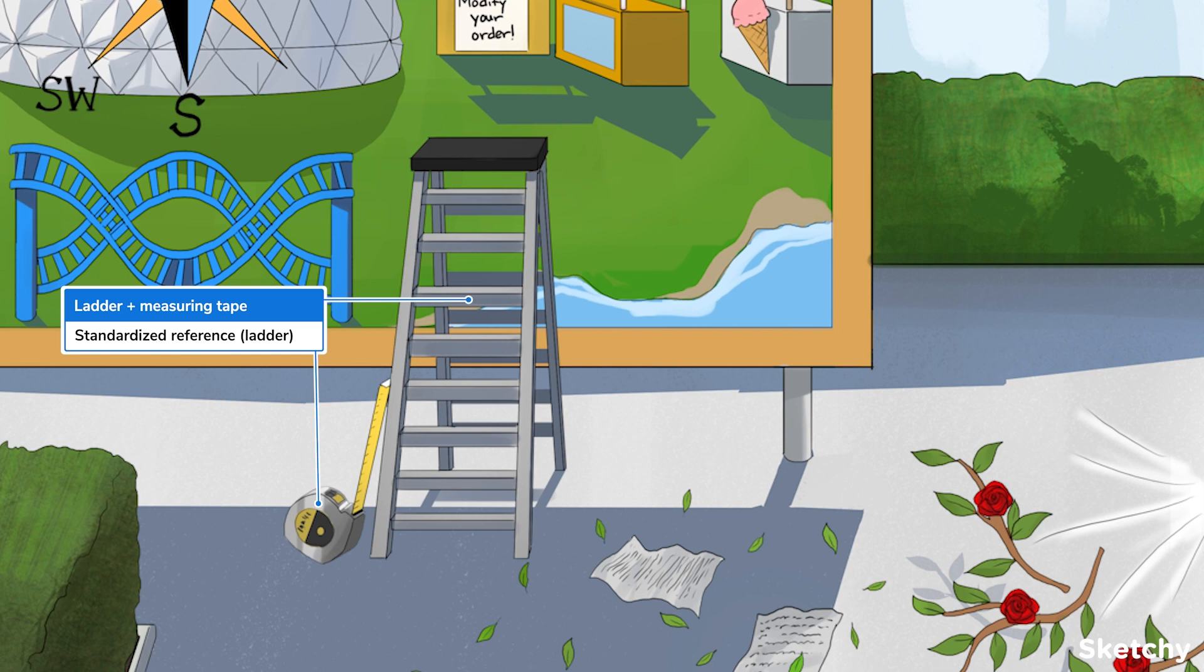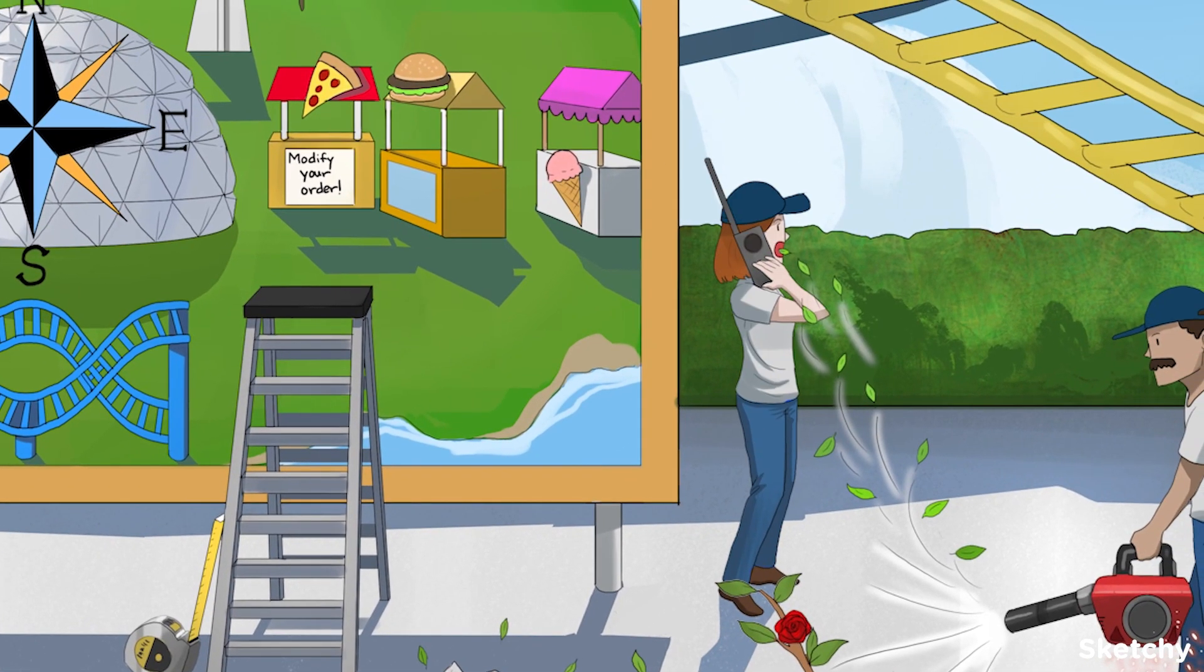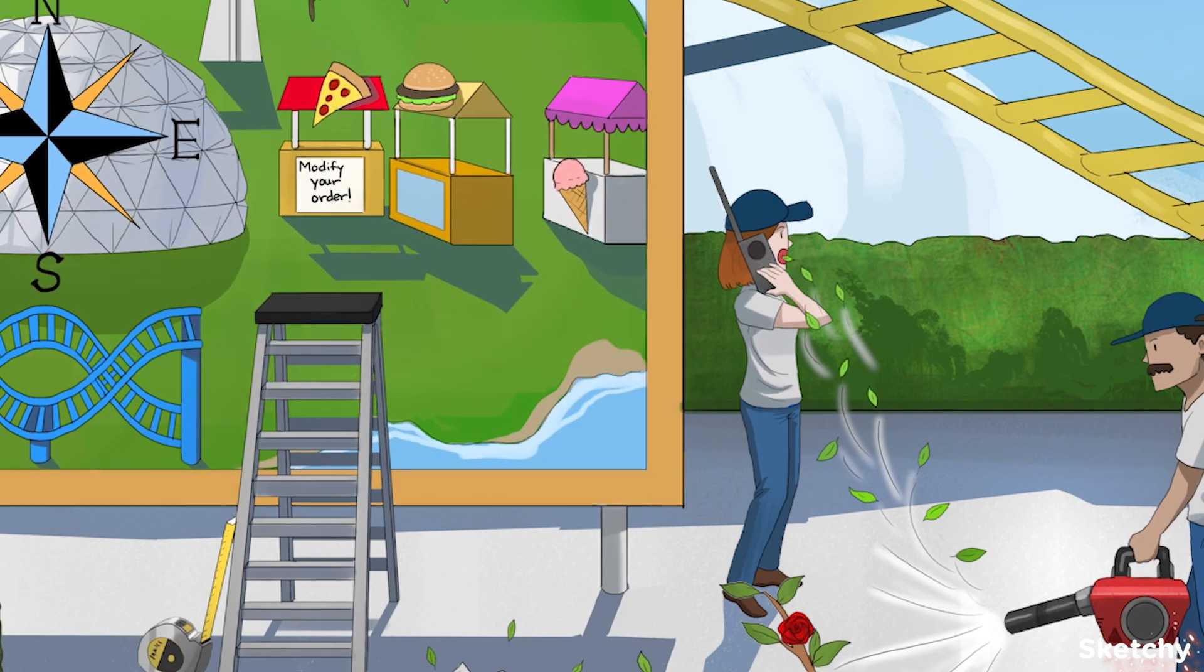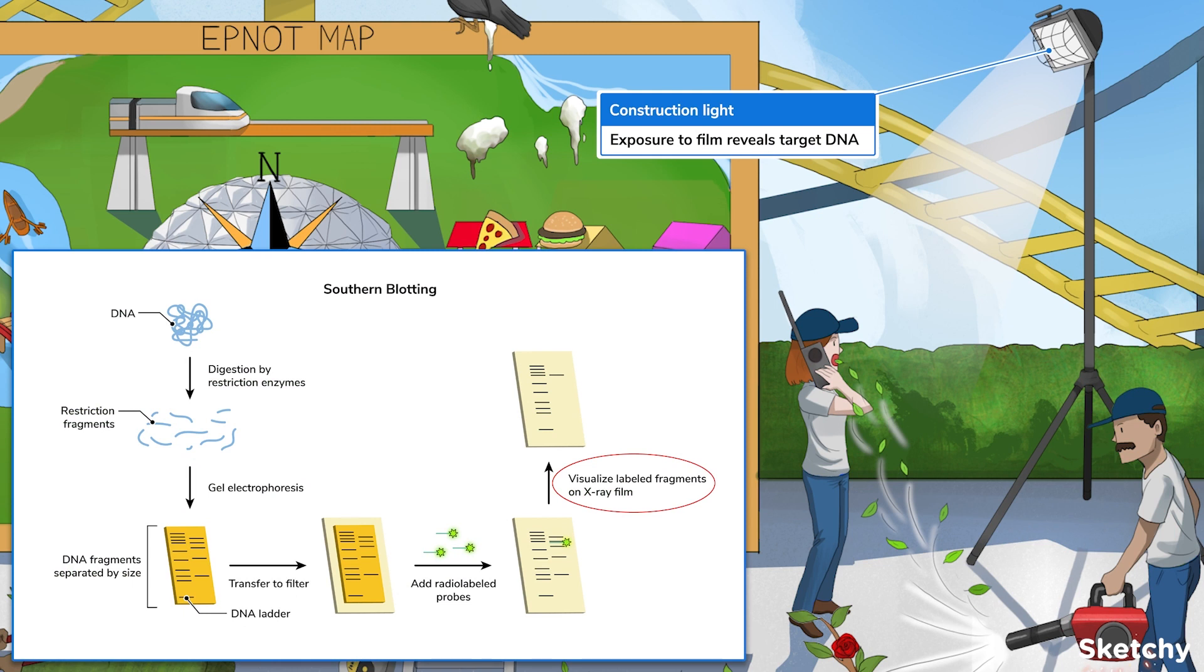Alright, now where are we? Oh yeah. We'll transfer these fragments to a filter, and then add a radio-labeled DNA probe, represented by this radio walkie-talkie. This probe will attach to our target DNA sequence by hybridization. I bet that leaves a sour taste in our groundkeeper's mouth. Finally, the target DNA sequence can be identified after the filter is exposed to film. And boom goes the dynamite. That's how to perform a Southern blot.